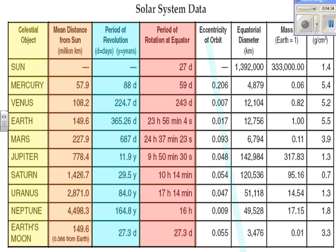The next column is the eccentricity of a planet's orbit, which measures how elliptical the orbit is. An eccentricity value of zero or close to zero means the orbit is a circle. Any value greater than zero and approaching one means the orbit is more elliptical — more elongated or stretched out. Eccentricity is typically asked in various questions, and you can find the information in this column.